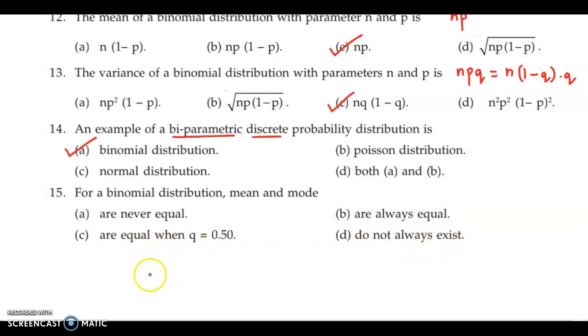Now we know that for a binomial distribution, mean is equal to median is equal to mode when the distribution is symmetric. And when distribution is symmetric...